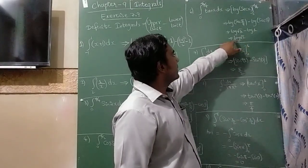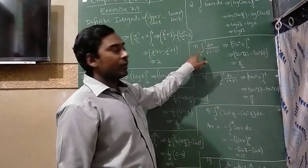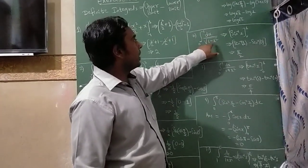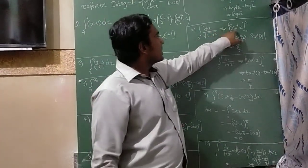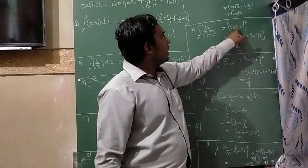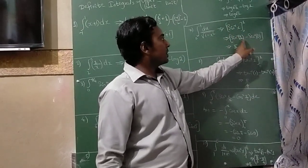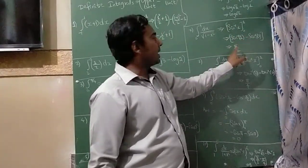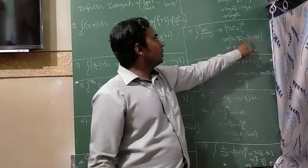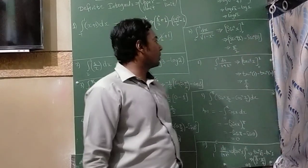The seventh question is integration of 0 to 1 of dx divided by √(1 − x²). The answer is sin⁻¹(x). Applying the upper limit 1 and lower limit 0: sin⁻¹(1) = 90° = π/2, minus sin⁻¹(0) = 0. So the answer is π/2.